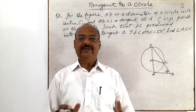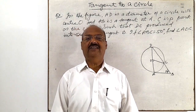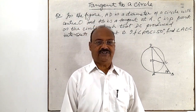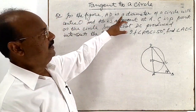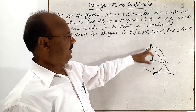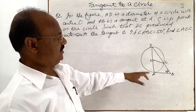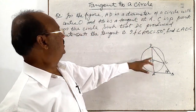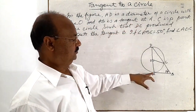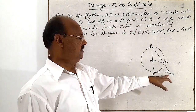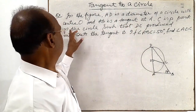Here we are going to discuss a very simple and very interesting question from the topic tangent to a circle. In the figure, AD is a diameter of a circle with center O. This diameter AD is passing through center O, and AB is a tangent at point A.